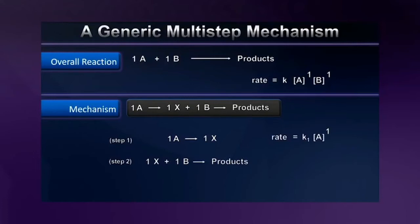The first being K1, for the first step, times concentration of A, the reactant in that first step. But we also have to consider the possibility that a second step in our process affects rate. As an elementary process, that particular one is K2, I'm calling it K2 because it's our second step, times the concentration of B raised to the first power, times the concentration of the intermediate X, also raised to the first power.